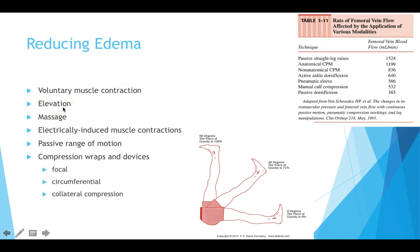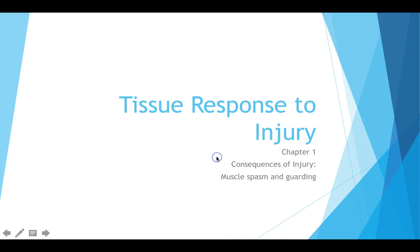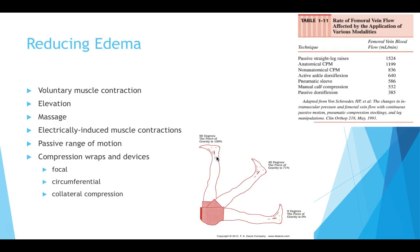Elevation is also important. At 90 degrees, the force of gravity is 100%; at 45 degrees, 71%; at 0 degrees, 0%. When we elevate to 90 degrees, we actually increase the tissue hydrostatic pressure so much because of gravity that it can help start to counteract the tissue oncotic pressure that was naturally occurring. So we can hopefully get a little bit more fluid exchange.